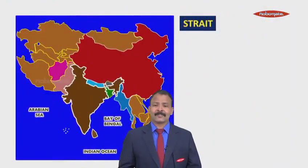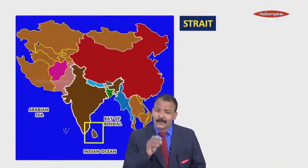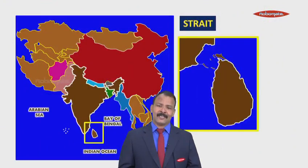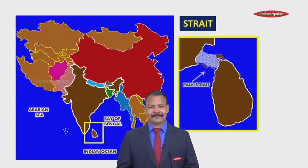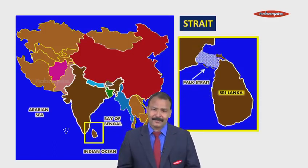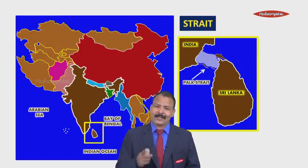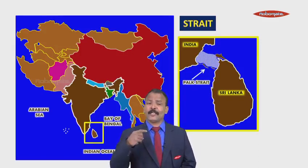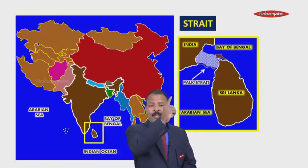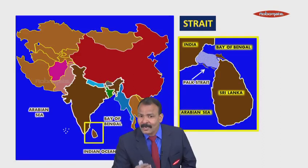In India, we also have a strait called Palk Strait. A strait is a narrow strip of water joining two land areas. Here, the two countries are India and Sri Lanka, and it joins two large water bodies: the Bay of Bengal and the Arabian Sea.